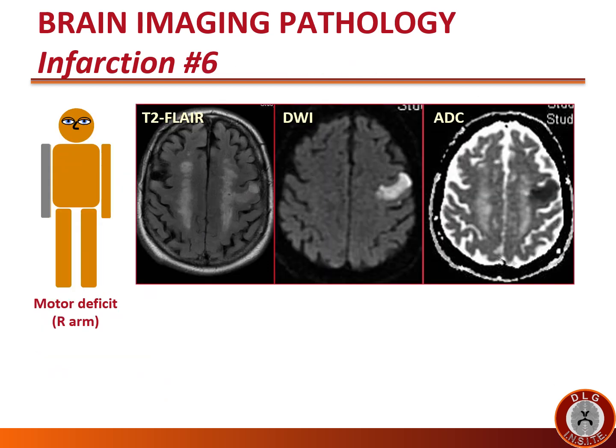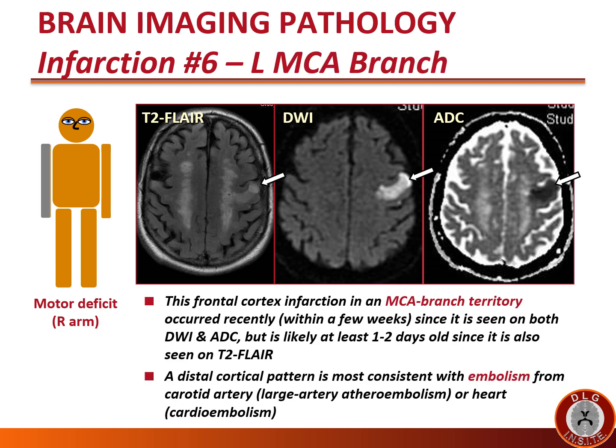This patient presented with right arm weakness, and we show his MRI scan images. The MRI shows a frontal cortex infarction in an MCA branch territory that occurred recently — within a few weeks — since it is seen on both DWI and ADC, but is likely at least one to two days old since it is also seen on FLAIR. A distal cortical pattern is most consistent with embolism from the carotid artery — large artery atheroembolism — or the heart — cardioembolism.